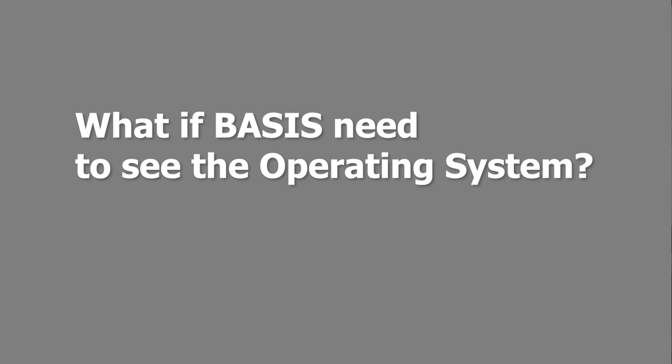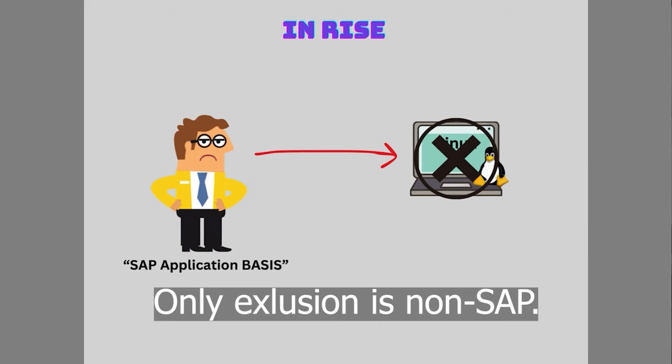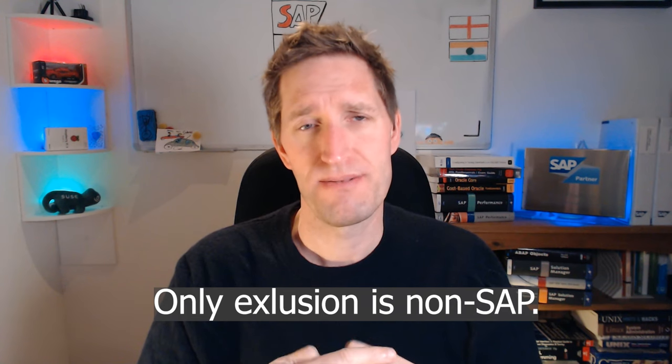What if Basis administrators need to see the operating system level? Under a RISE with SAP subscription, our typical Basis administrator does not get access to the operating system at all — not even negotiable. They will need to rely on the capability of the SAP application to provide that level of information, which will be limited. The operating system is out of scope for SAP application basis. If the customer has specific requirements for OS-level task execution, this can be requested to be executed by SAP.